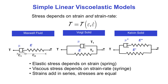Strains add in series. For example, the strain in the Maxwell fluid is the sum of epsilon 1, the strain in the dashpot, and epsilon 2, the strain in the spring. And the stresses in series are equal — the stress in the dashpot and the stress in the spring are the same because they're in series.